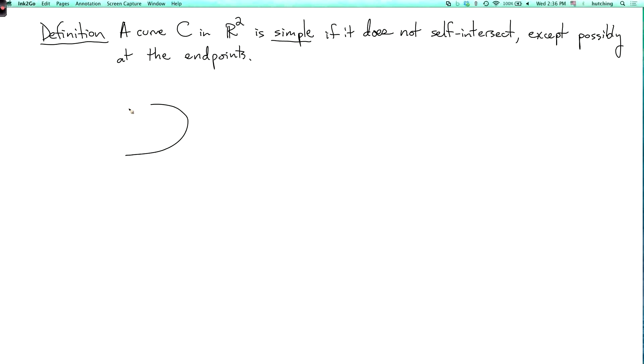A curve like this is simple. A curve starting and ending at the same point but not crossing is simple. So these two are simple.